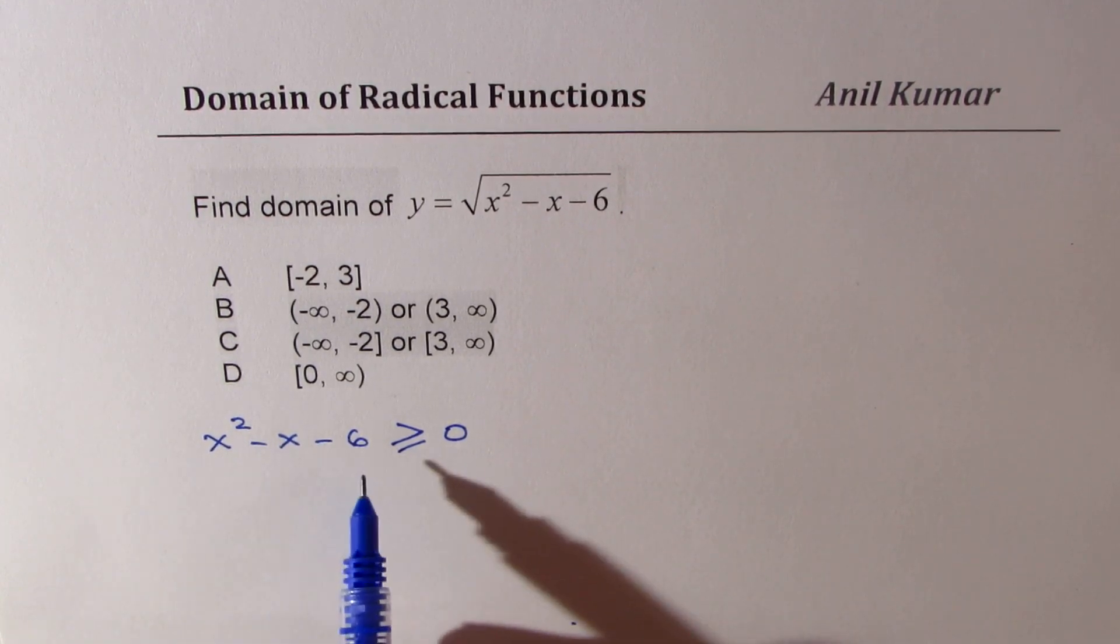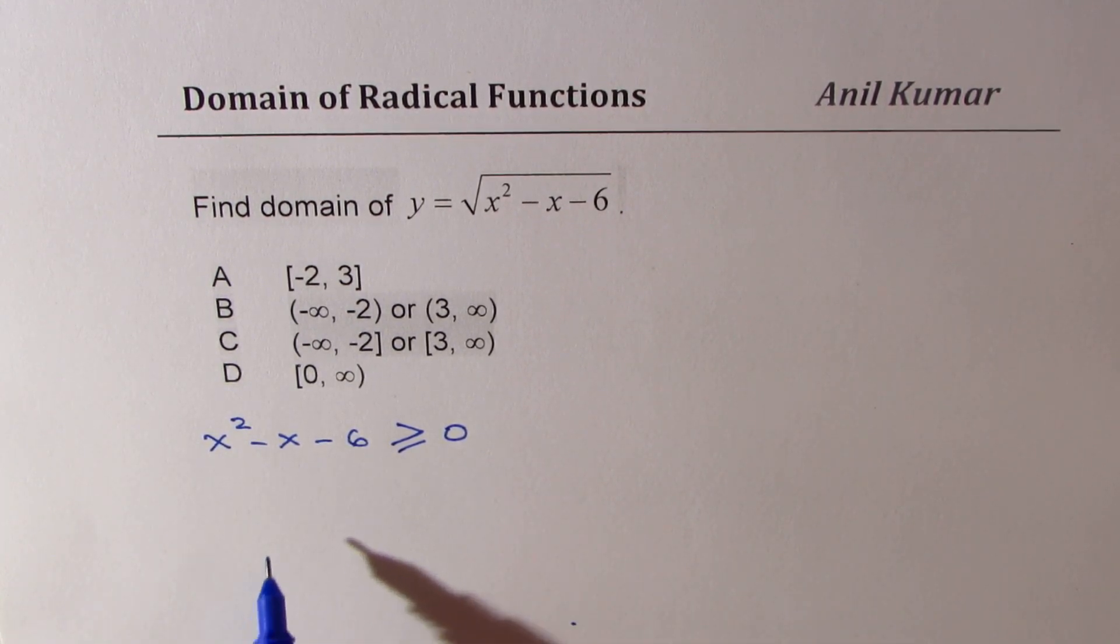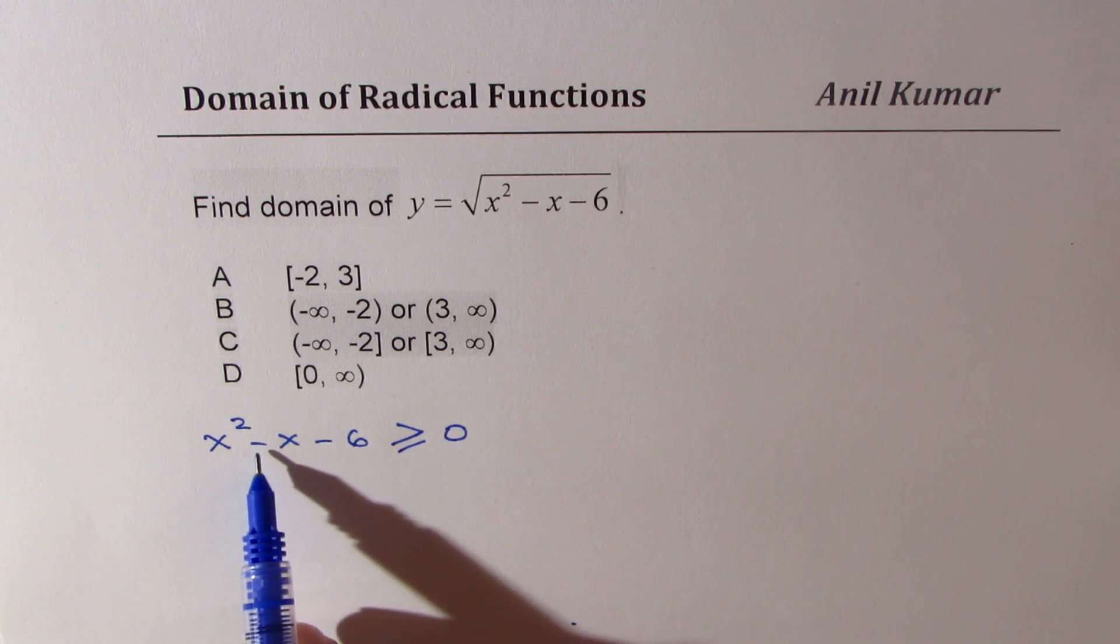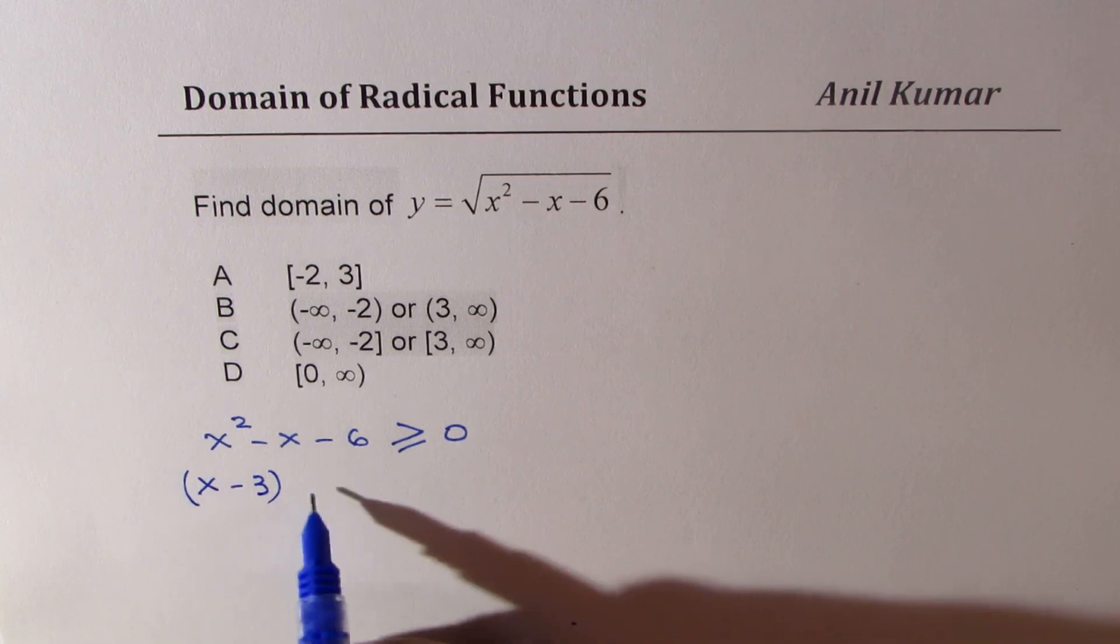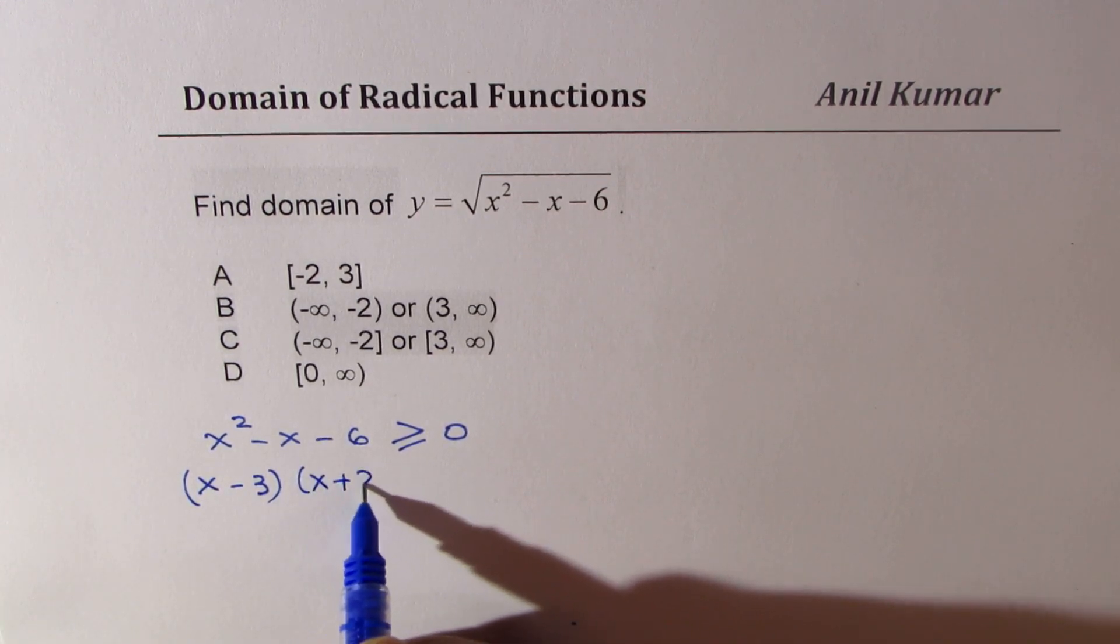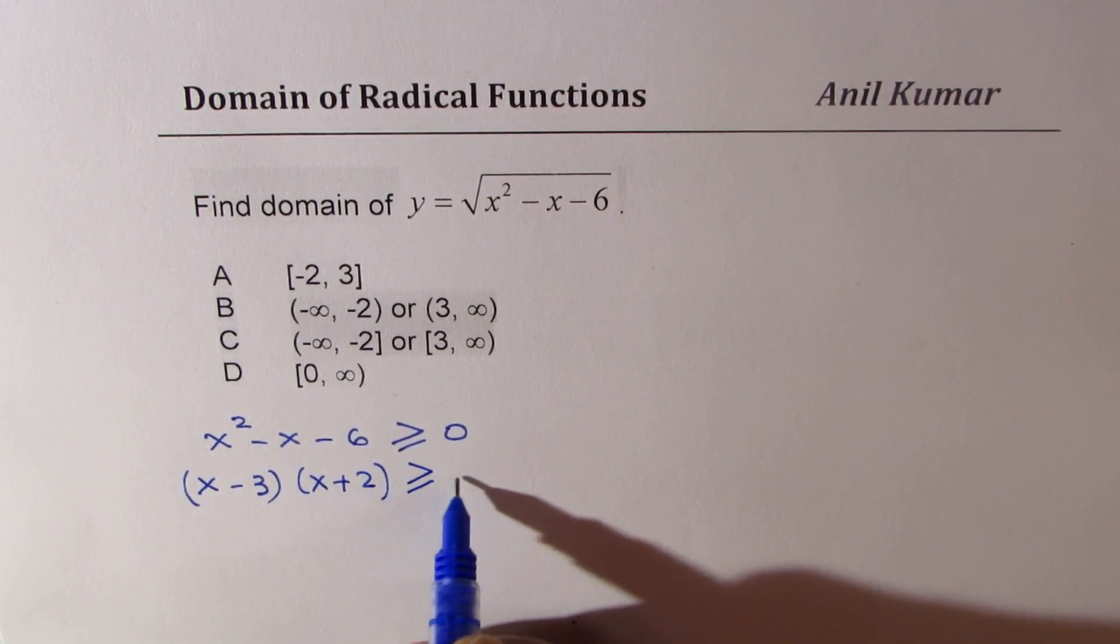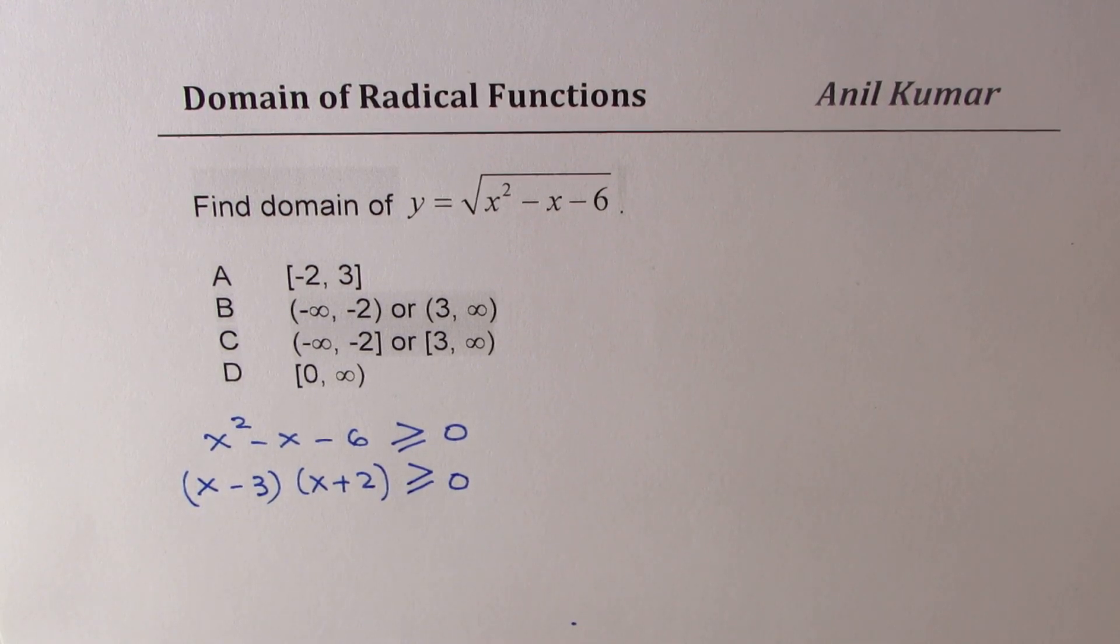We could factor this using product and sum. 3 times 2 is 6. To make it minus 1 as the coefficient, it means x minus 3 and x plus 2. That becomes your factored form. Now it is relatively simple. You could solve this using interval notation or you could actually graph and then figure it out. I'll prefer to show it from a graph.